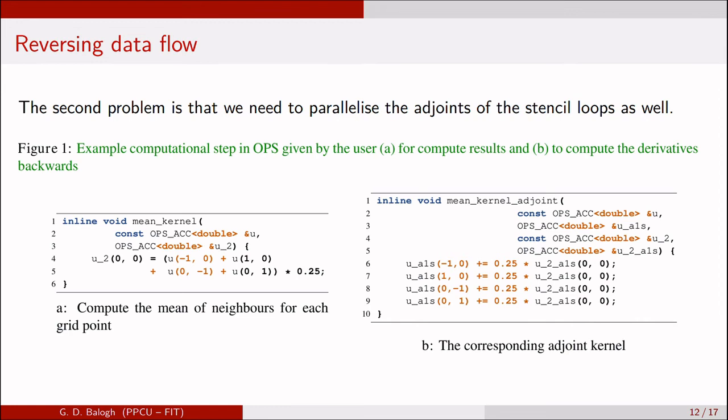For reversing the data flow, OPS requires each loop to only use gather operations, which means we only write data in the center of the iteration and read data from neighboring points through stencils. For example, on the left hand side, we read the U2 dataset with a 0,0 offset, and we read the four neighboring points in a 2D grid to compute the mean of those points.